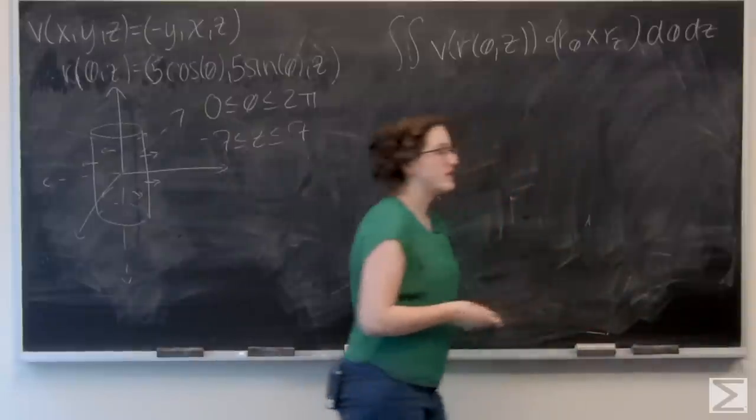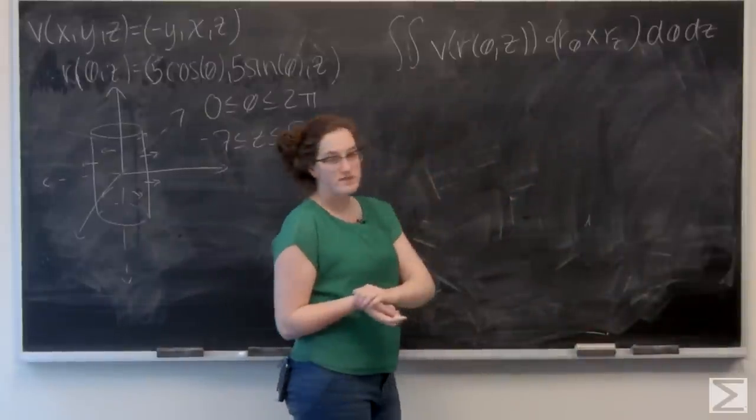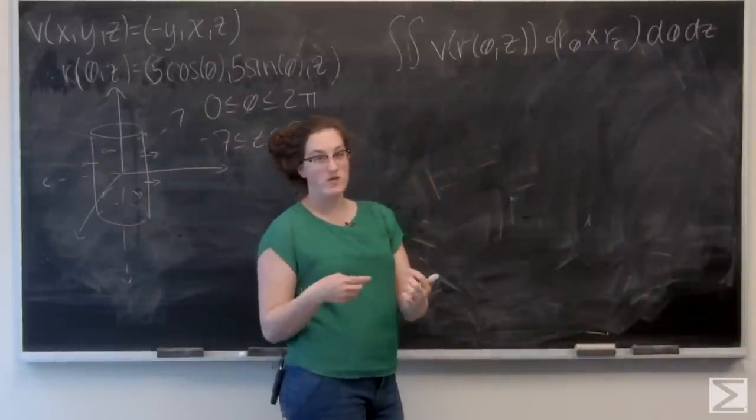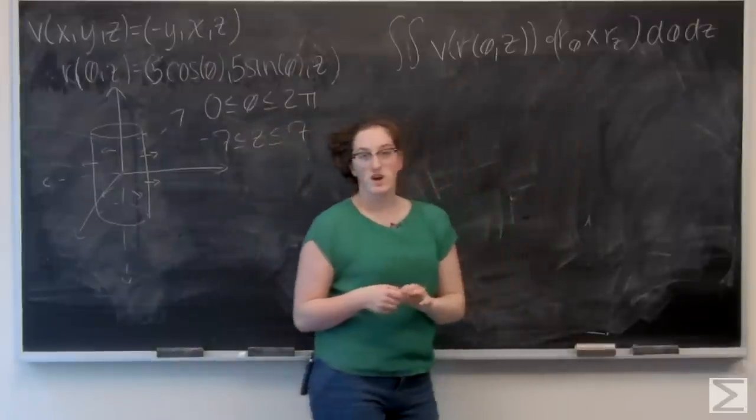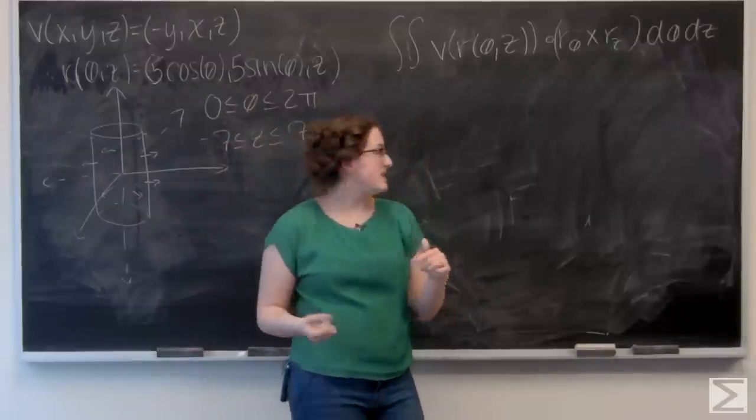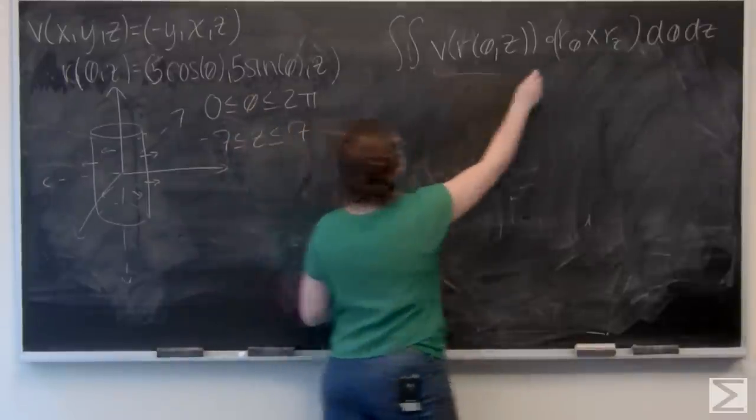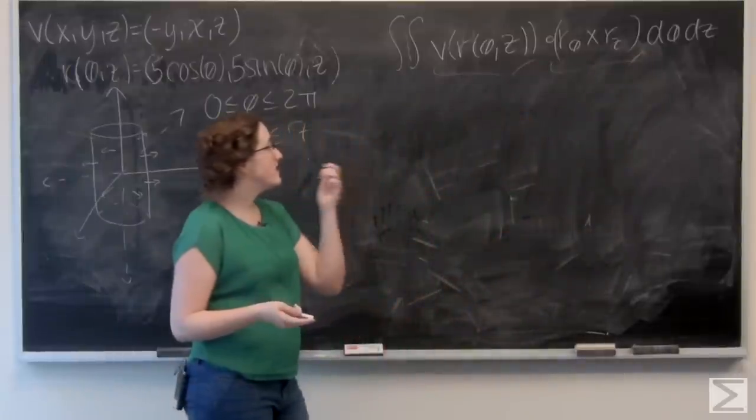So it's a double integral with respect to theta and z, and it is v of r of theta and z, so the vector field evaluated over the surface dotted with the cross product of the two partial derivatives of that parametrization. So r theta and z. So I have two major components that I need to find before I can integrate.